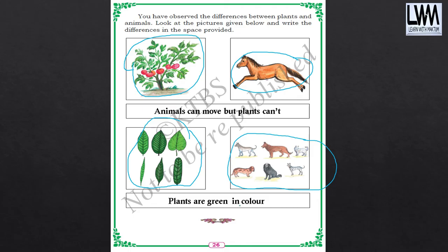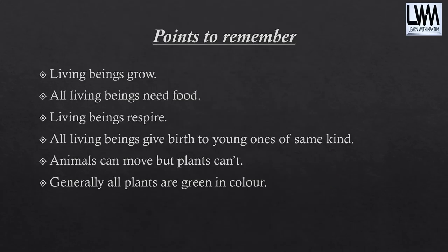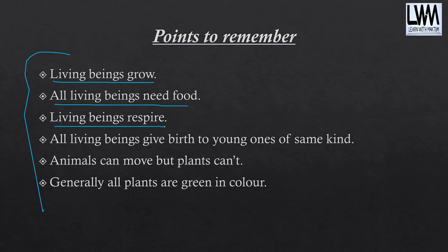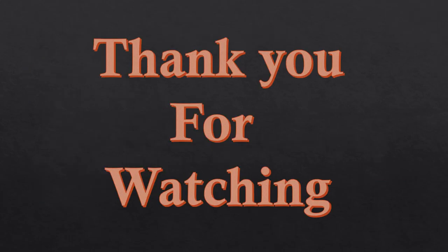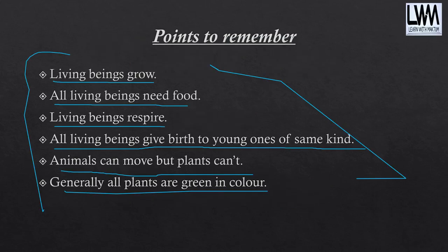In this lesson, we studied what are living things, what are non-living things, and the differences between plants and animals, and also the similarities. Let me give you the simple points to remember: living beings grow; all living beings need food; living beings respire; all living beings give birth to young ones of the same kind; animals can move but plants cannot; generally all plants are green in color. These are the quick points which you can remember. You can take a snap also if you want. So this completes the third lesson — Judgment of the Owl.